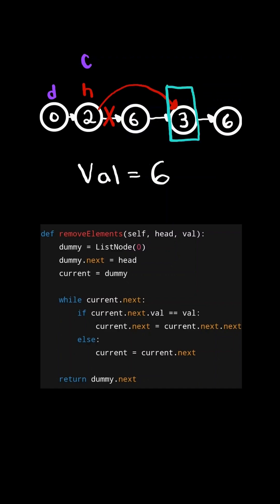Current.next does not equal null, and the node's value does not equal the integer. So we advance current by setting current equal to current.next. And we continue.